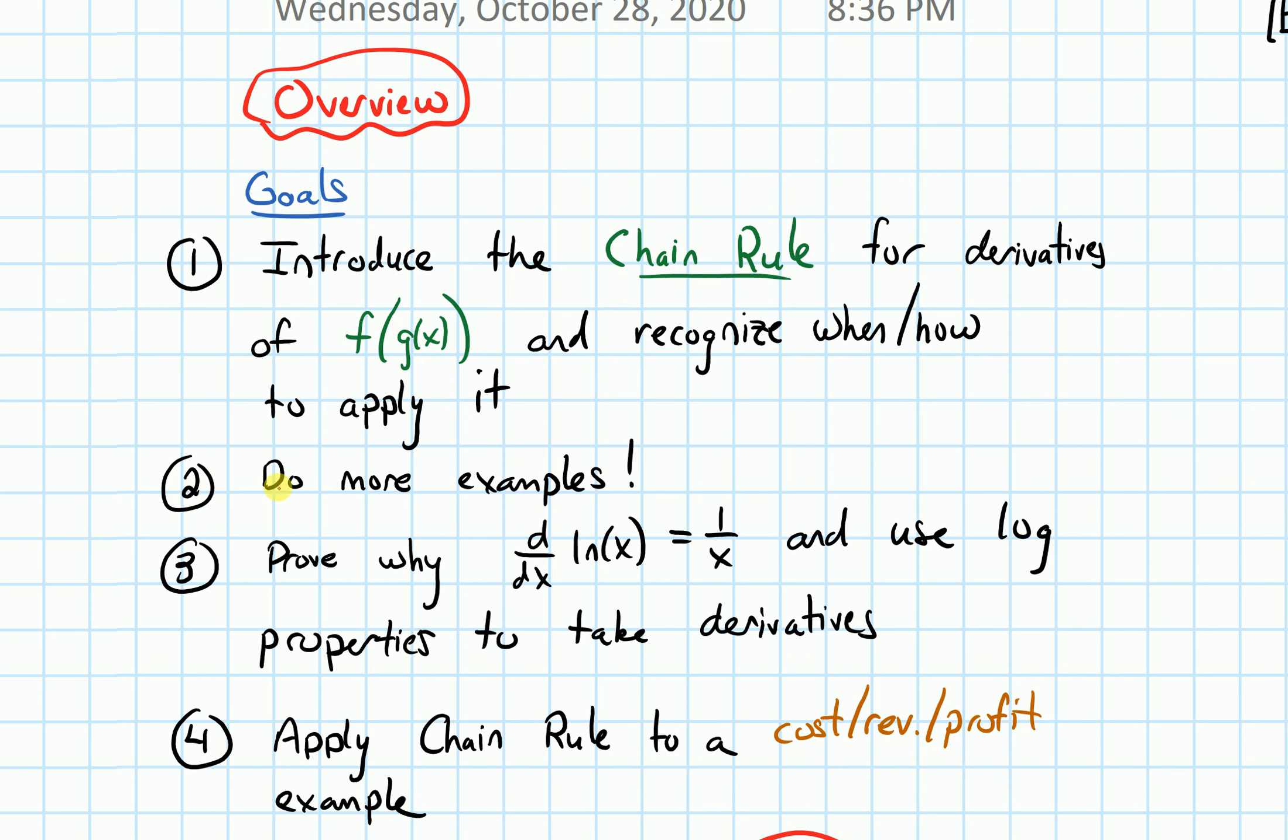Our second goal is to do more examples. The chain rule is one of the most important rules to practice with. The best way to get comfortable with the chain rule and how it works is to do a bunch of examples.